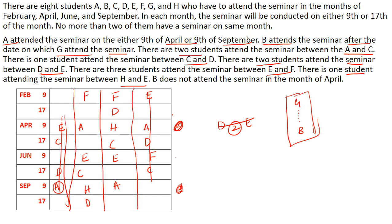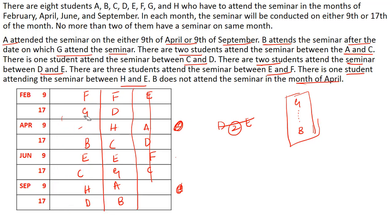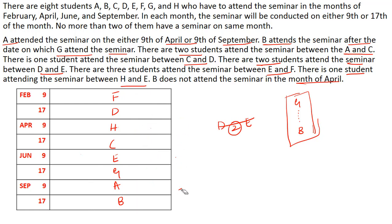The next clue: B does not attend the seminar in the month of April. So if G is placed in a position where B would fall in April, that possibility gets eliminated. After G is placed, B can be at the next valid position — and this gives us the final arrangement. This is an easy question, friends; it should not take more than two minutes to solve in the actual exam. Practice well. Thank you for watching — please subscribe to the channel, like the video, share it with your friends, and leave any doubts in the comments below.